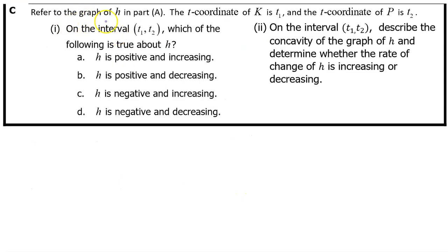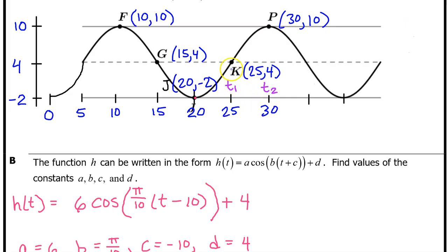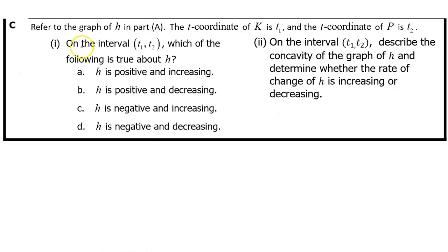Part C, refer to the graph of h in Part A. The t-coordinate of K is t₁, and the t-coordinate of P is t₂. In other words, here's t₁, and here is t₂.